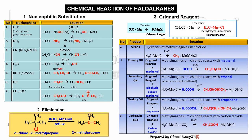Now we move to the chemical reactions of haloalkane — there are three. The first is nucleophilic substitution, with seven types of nucleophiles. The first nucleophile is hydroxide from a strong base like sodium hydroxide or potassium hydroxide. OH substitutes the halogen to form alcohol. The second nucleophile is ammonia, which substitutes the chloride ion to form an amine.